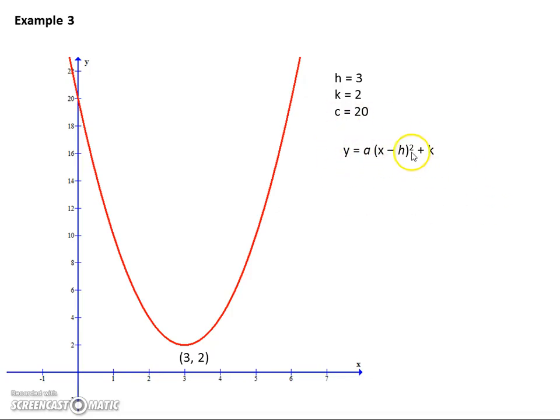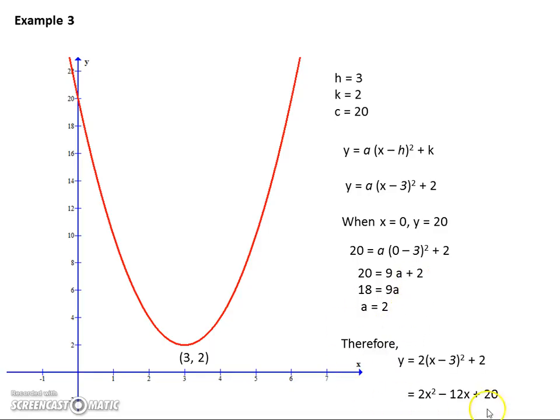So y equals a(x minus h) squared plus k. Now we put those numbers in and we still don't know what a is. So we do the same as we've done the last two times. x equals zero, y equals 20. We put that in and we work out that a equals two and there we go. There's our expanded final answer.